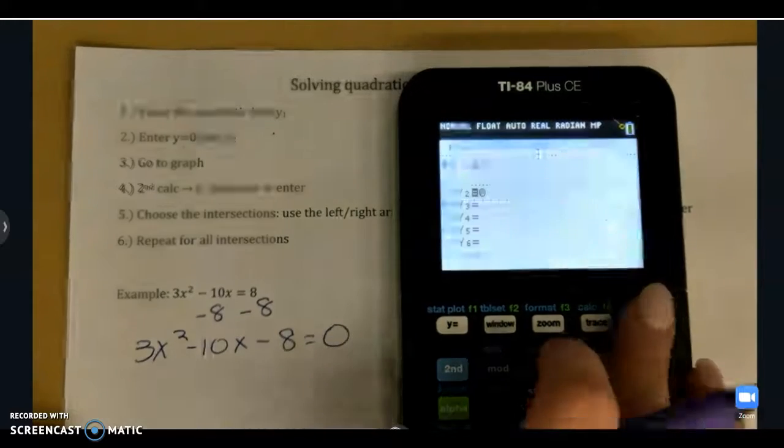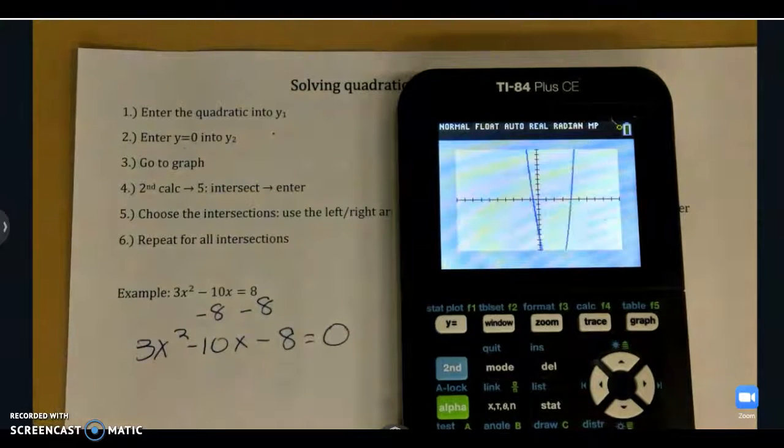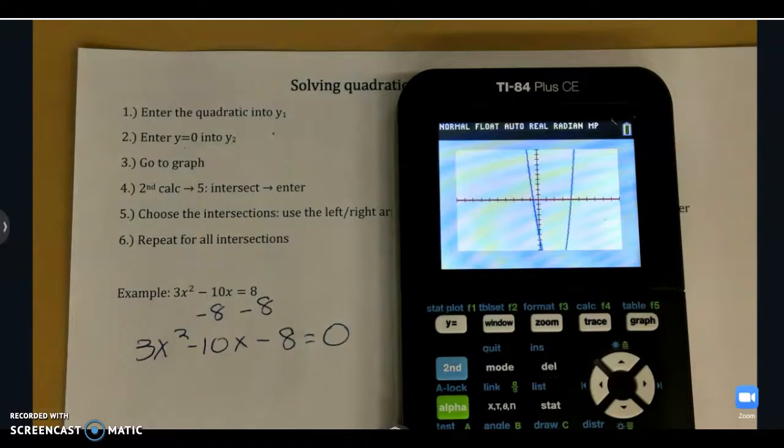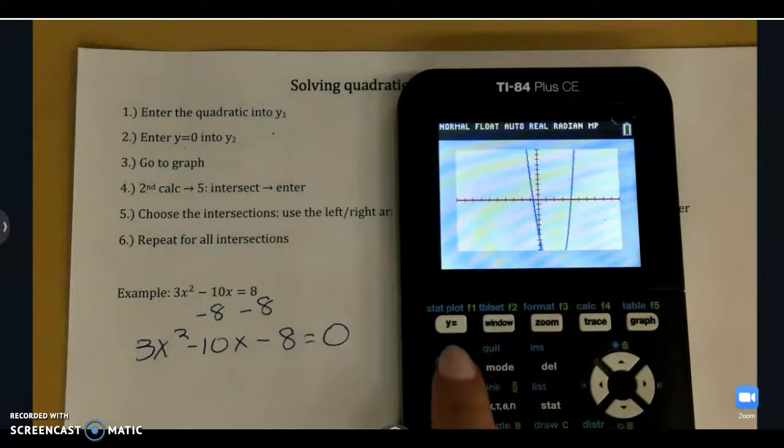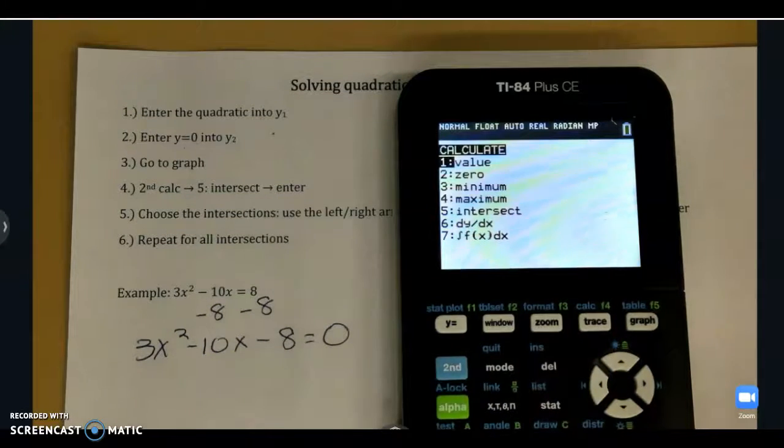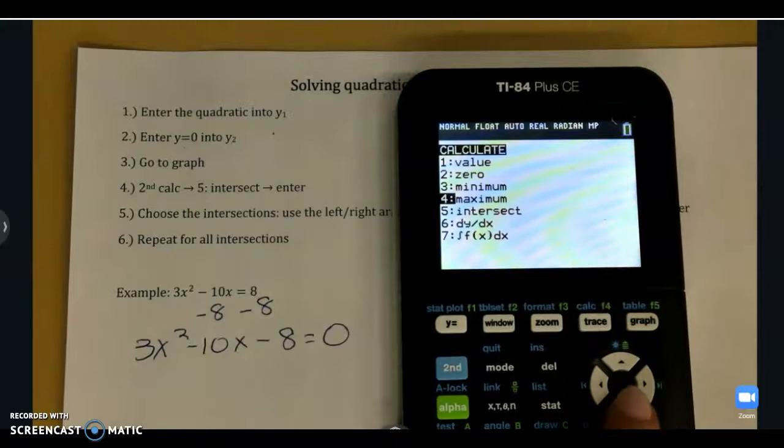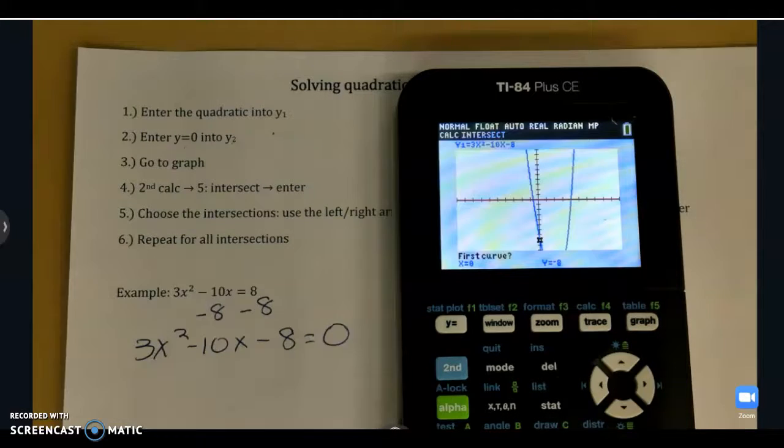Once you have gotten to this step, you're going to graph it. Our Y1 is going to show up in blue, and Y2 is going to show up in red. Now we want to find the intersection. So you're going to go to 2nd, calc, and you can either scroll down to intersect or just press 5, then hit enter.